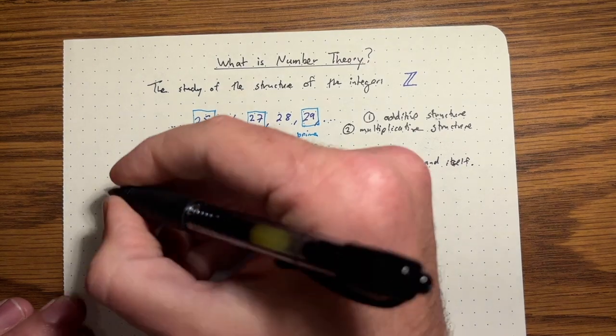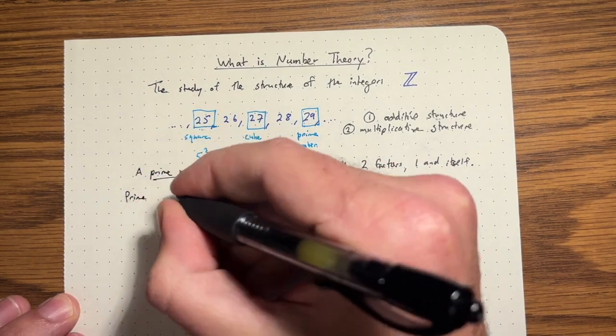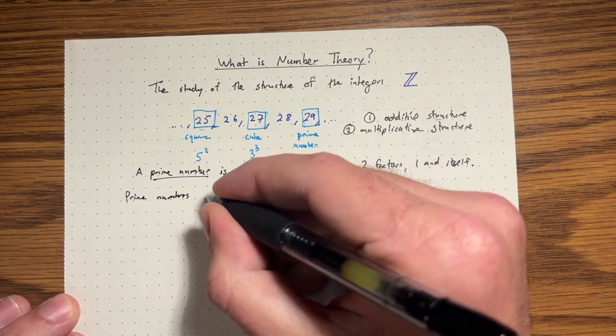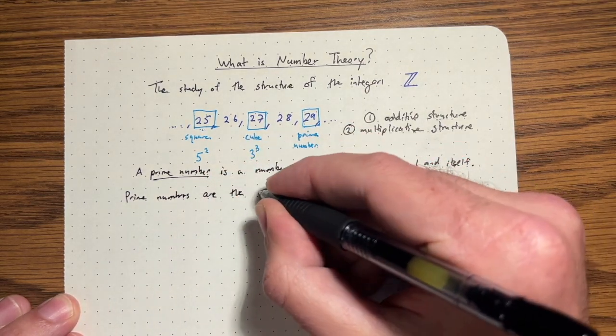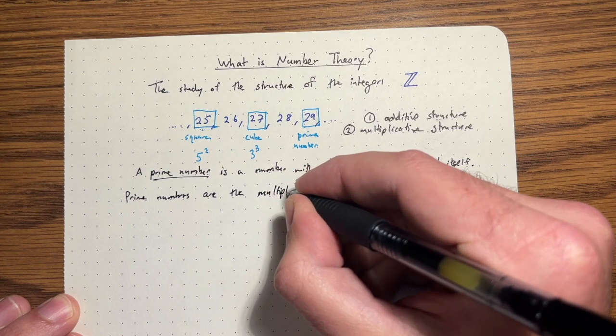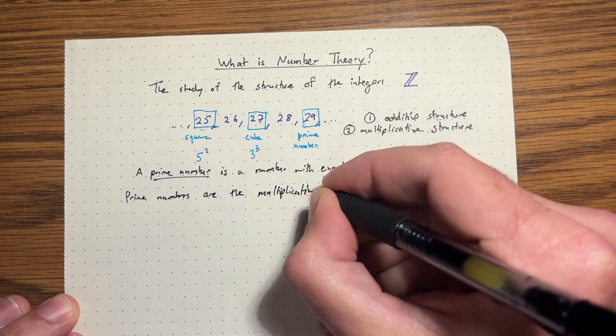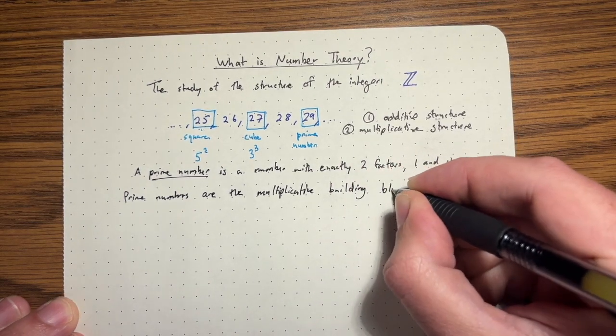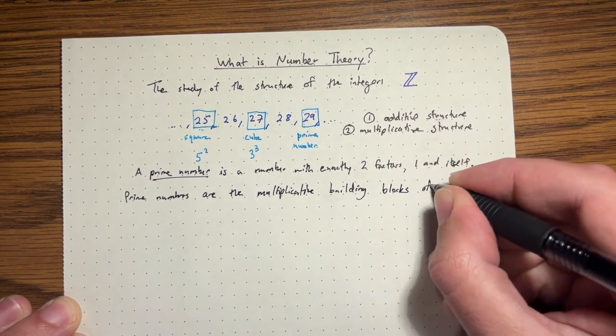The reason has to do with the fact that the primes sort of generate the multiplicative structure. Prime numbers are, you can think of them as the multiplicative building blocks of all numbers.